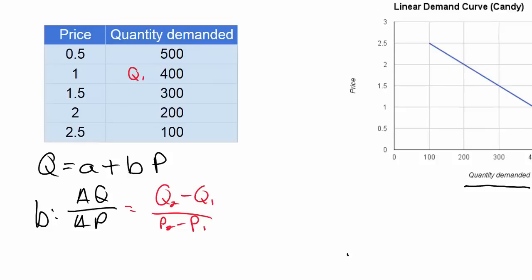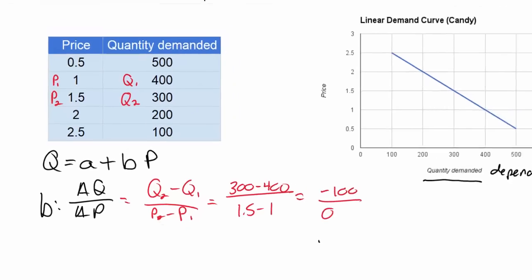Let's choose a couple price and quantity combinations from our table. Let's choose 400 as our Q1 and 300 as our Q2, and we'll choose $1 as our P1 and $1.50 as our P2. With these we can plug the numbers in and calculate the b variable. So we can do 300 minus 400 divided by $1.50 minus $1.00, and that can be simplified as minus 100 divided by 0.5.